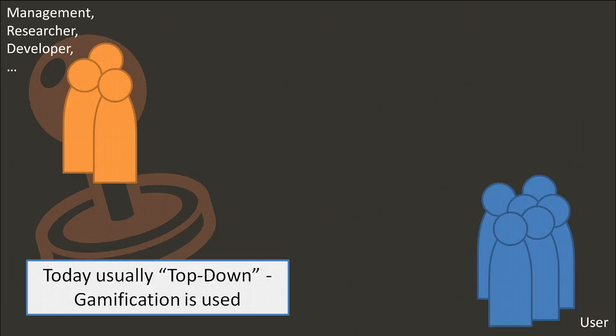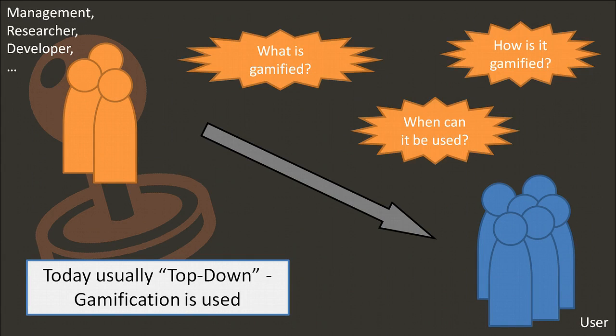Today, usually top-down gamification is used in systems. This means that people that are not necessarily the subsequent users decide what should be gamified in the system, how it is gamified and when users can use it.